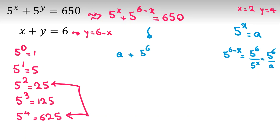The equation becomes a plus 5^6 over a equals 650. In the next step, I multiply both sides by a: a^2 plus 5^6 equals 650a.